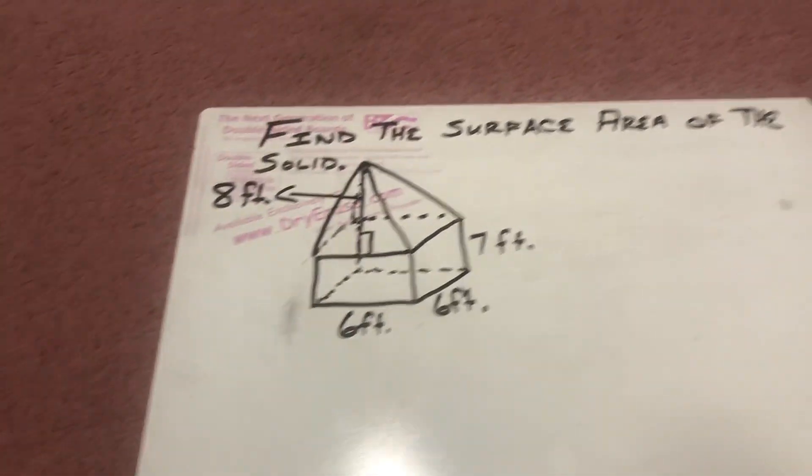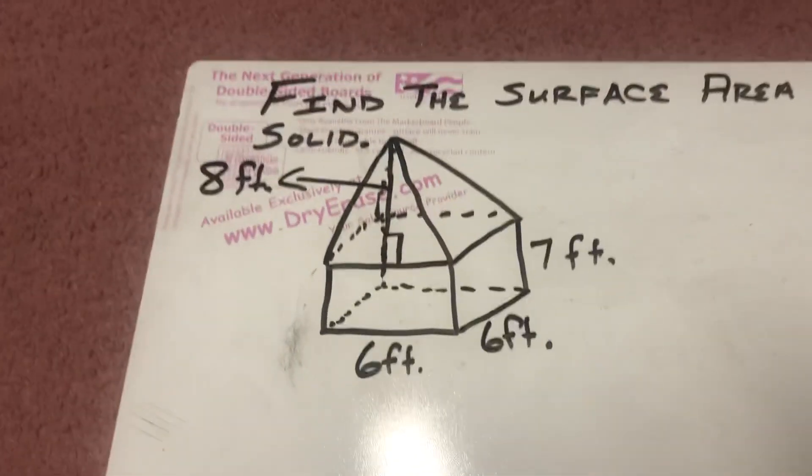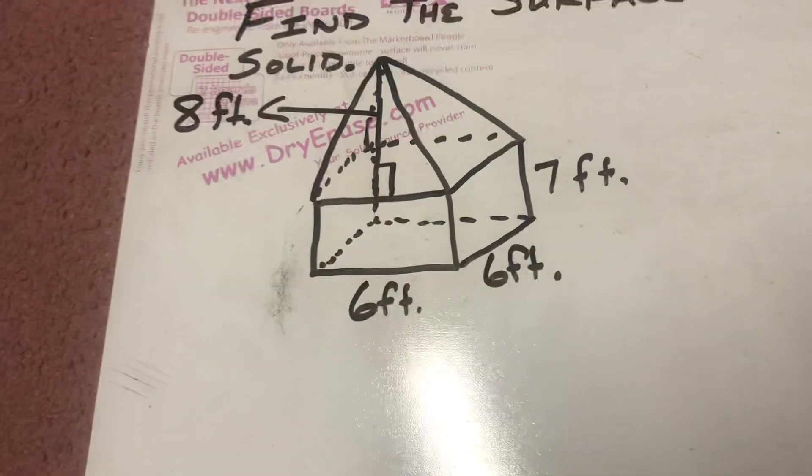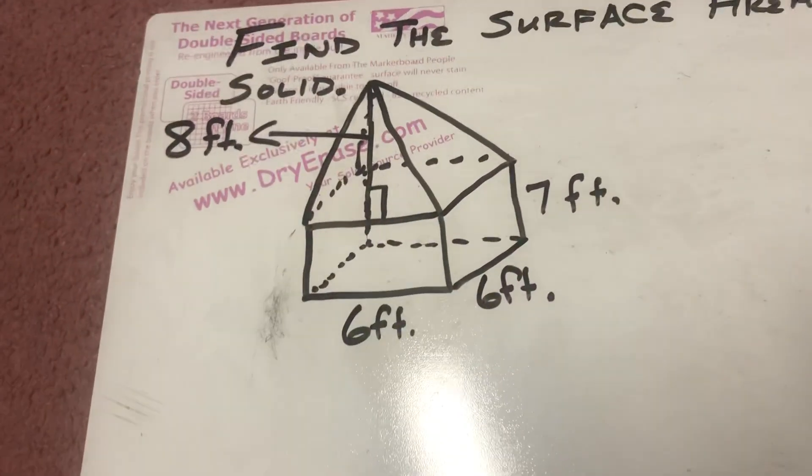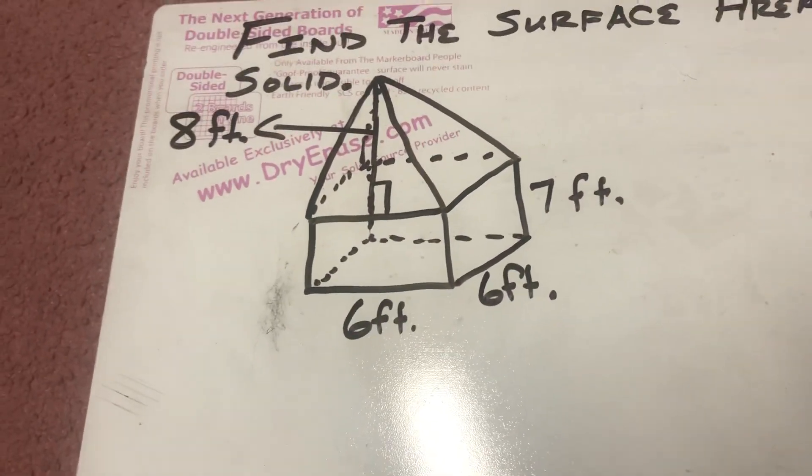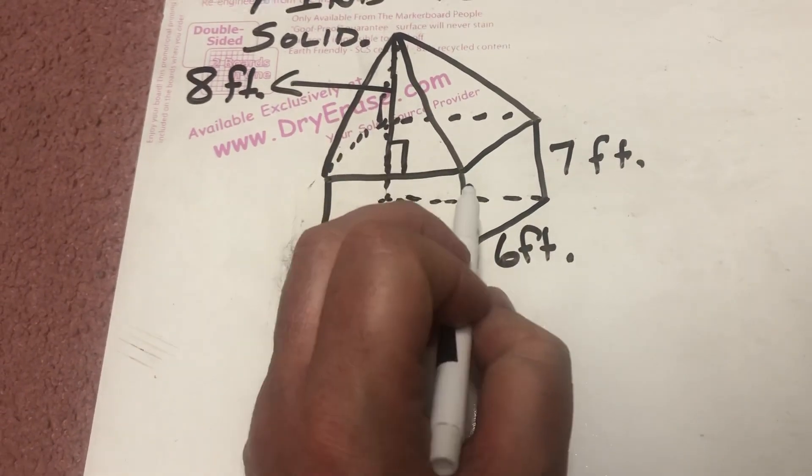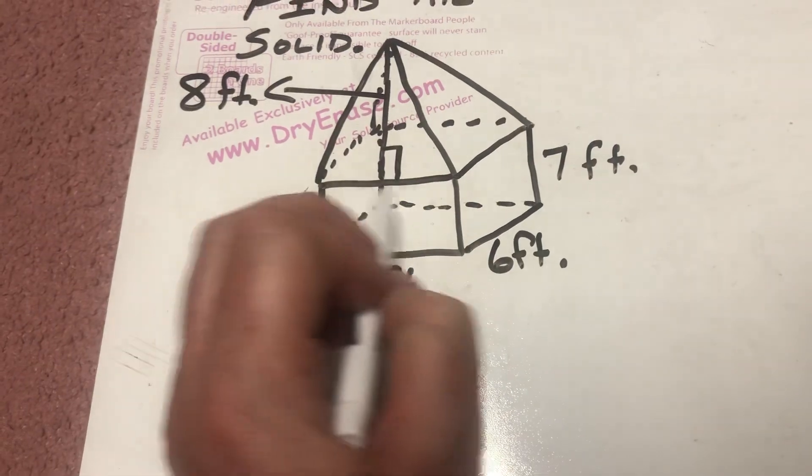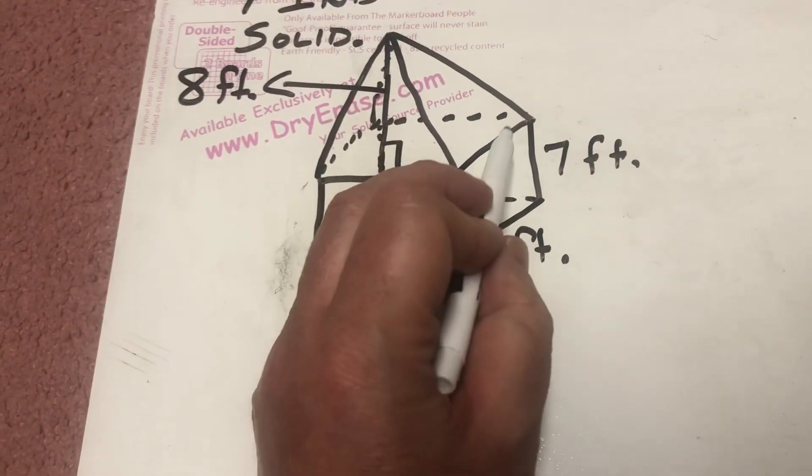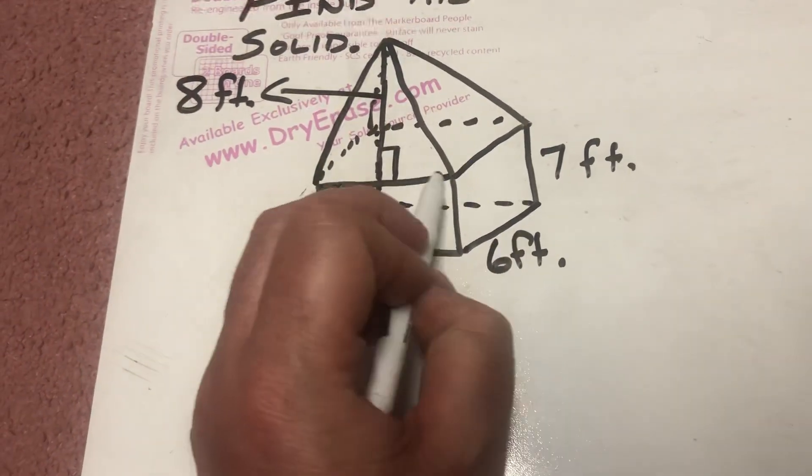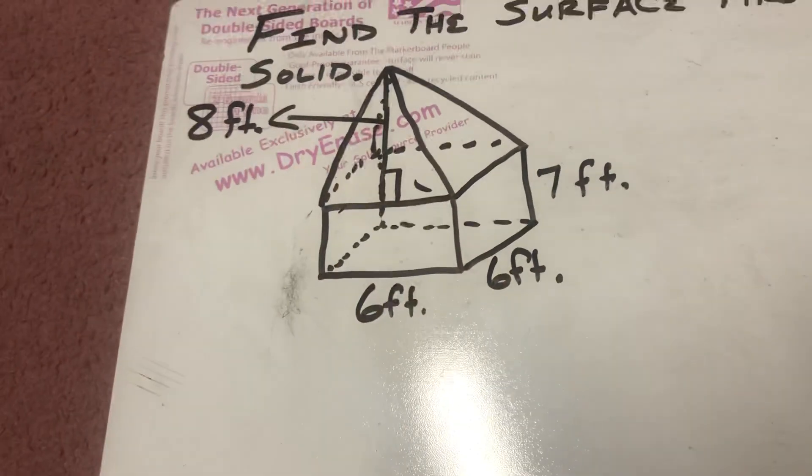Now, last one. You're also going to get some composite solids. But they're going to tell you to find the surface area of this solid. It really has no name. But what we basically have is we have a rectangular prism down here. And then we have a triangular prism. But what we want to remember in the surface area is that this face right here that would be the base of the pyramid and would be the top face of the rectangular prism is not part of the surface area.